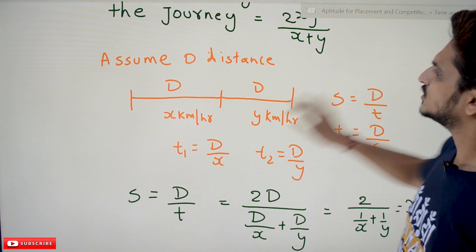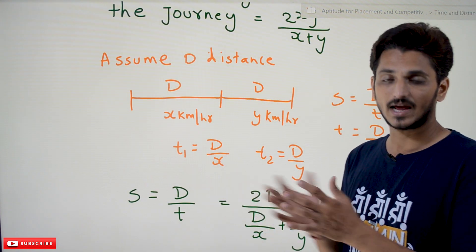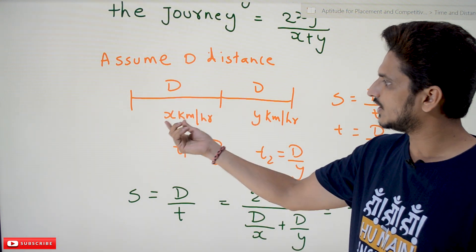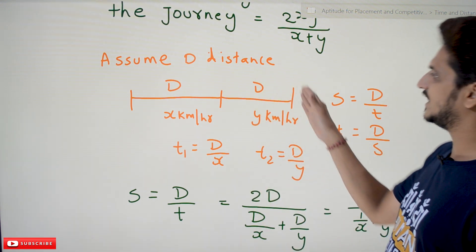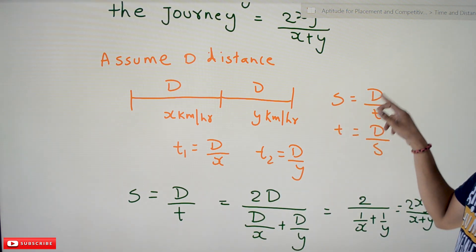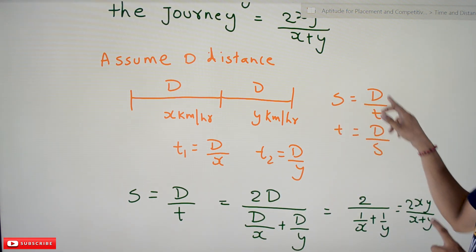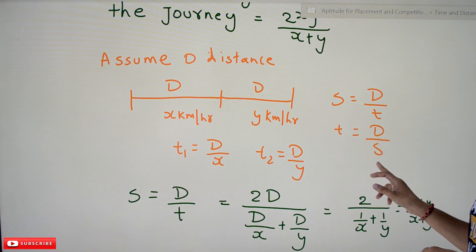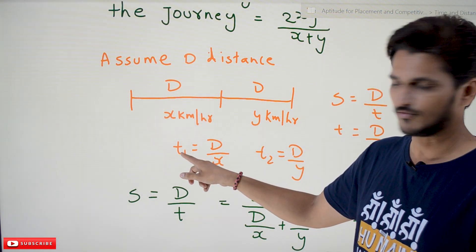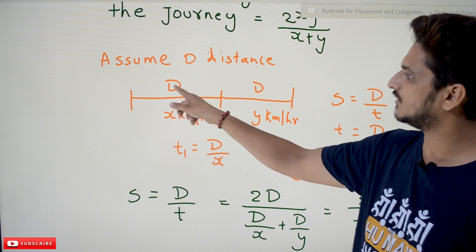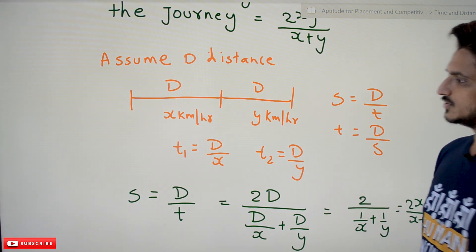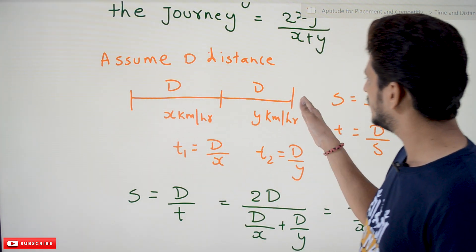Graphically: assume he traveled distance d from here to here at a speed of x kilometers per hour, and the same distance d at y kilometers per hour. Using the equation speed equals distance by time, time equals distance by speed. So time t1 — from here to here at x km/h — is d divided by x. And t2 equals d divided by y.